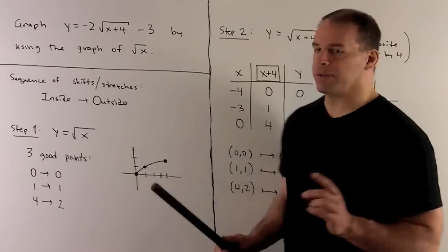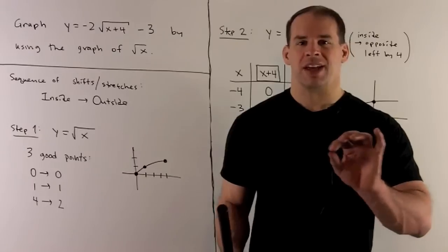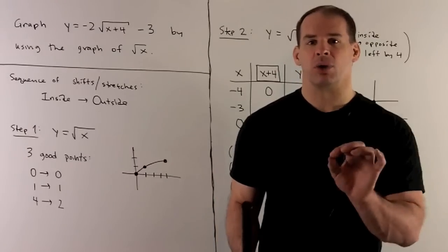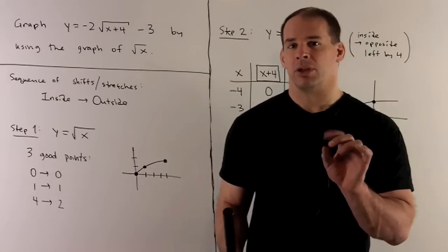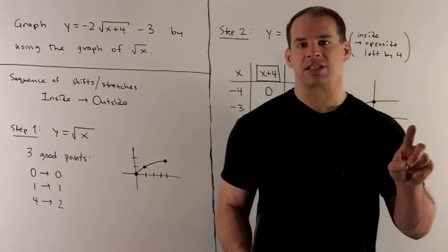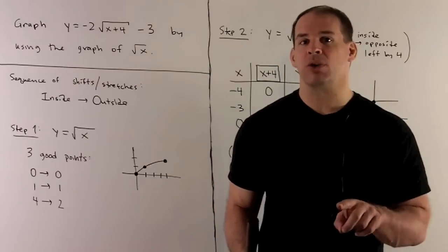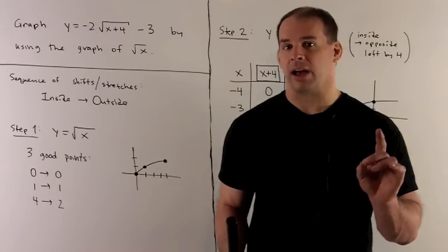Now what's our first operation? For things that are on the inside of your original function, they're going to affect what happens along x. If they're going to be on the outside of your original function, they're going to affect your y values.